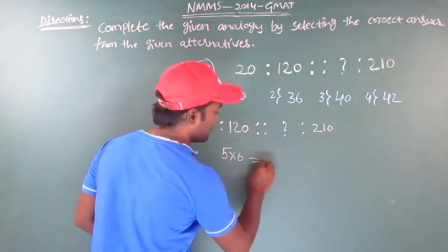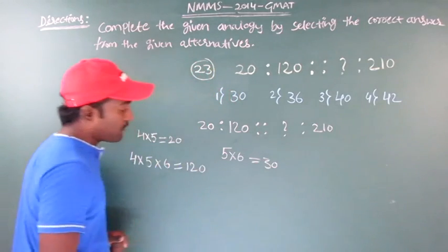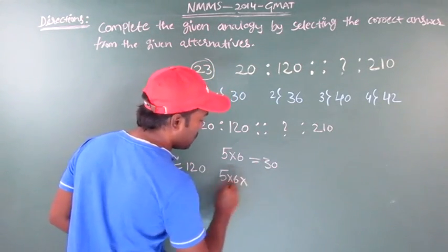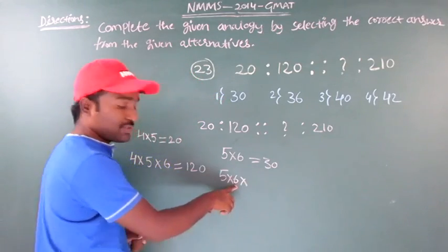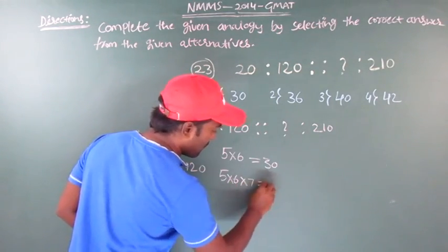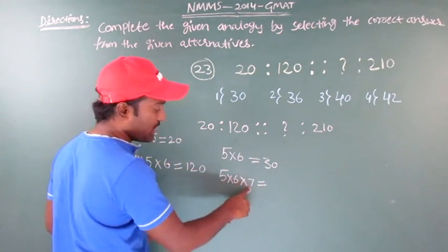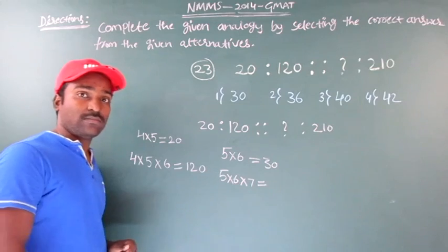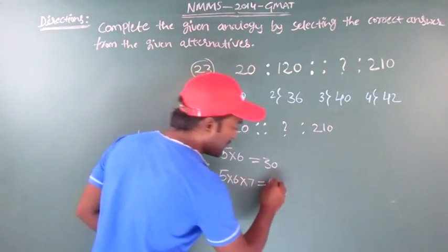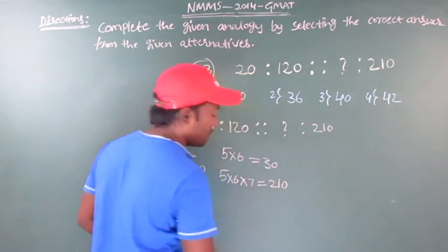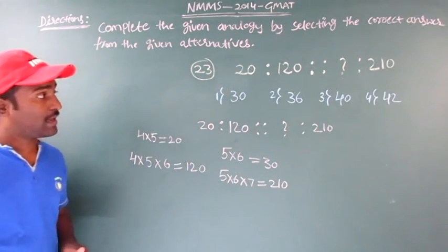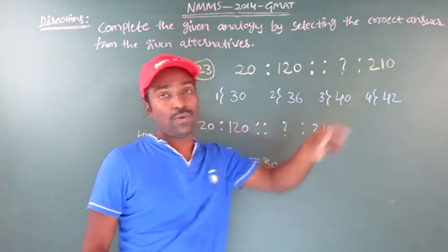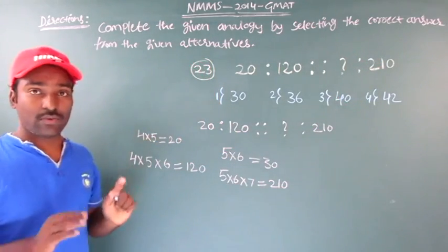5 into 6 is 30. Now, 5 into 6 into the next consecutive number — after 6 comes 7 — so 5 into 6 into 7. Now 5 into 6 is 30, and 30 into 7 gives 210. And the number 210 is exactly what we have here. So the first option is the right option.